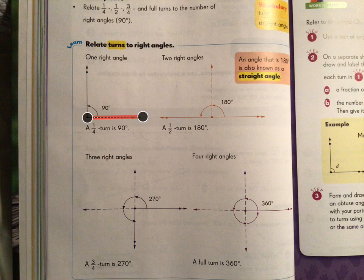Today we are talking about turns and right angles. We had a previous video about turns where we talked about a quarter turn, a half turn, three-quarter turn, and a full turn. And today we're going to relate those turns to 90 degree angles.